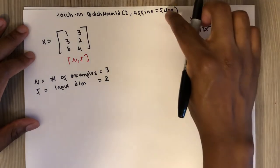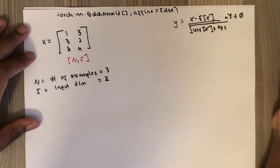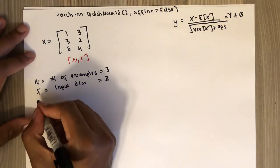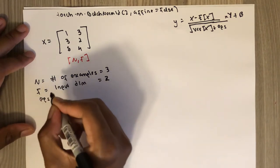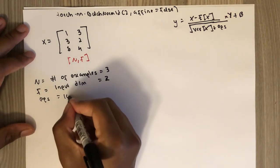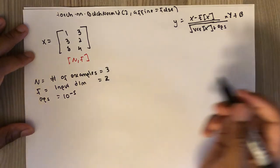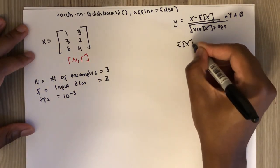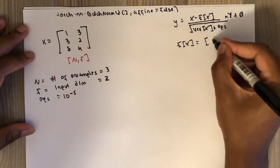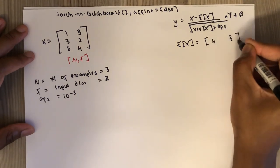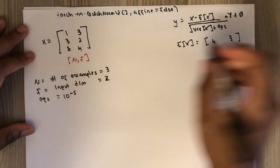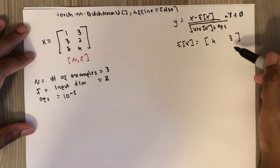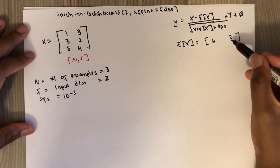Plus beta. So if this was true, gamma and beta will be trainable. And epsilon is 10 to the power minus 5. The expected value is literally the mean, 4 and 3.